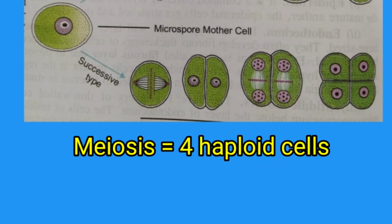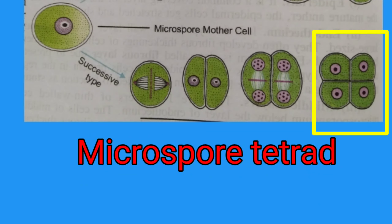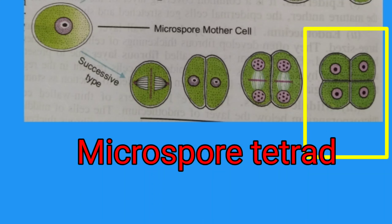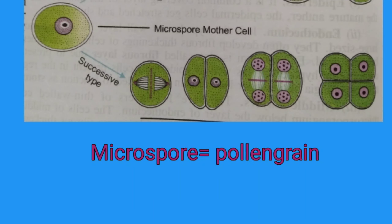The microspore mother cell undergoes meiotic division. Meiosis gives rise to four haploid microspores. First, the microspore mother cell nucleus divides into two, then it gives rise to four nuclei, ultimately producing the four microspore tetrads. The pollen grains or microspores are produced in tetrad form from the meiotic division of the microspore mother cells.